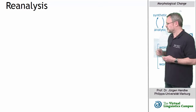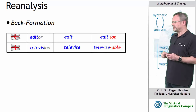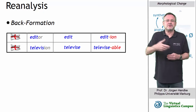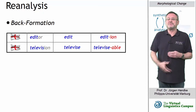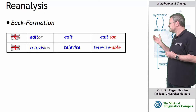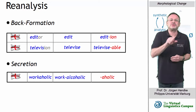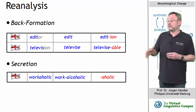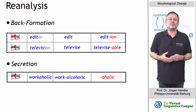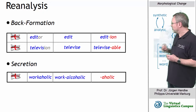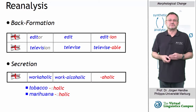Reanalysis is a further morphological change that creates new morphological patterns in two ways. The first is referred to as back formation, where new formations become possible after a complex word has been associated with new morphological patterns, as in 'edit' or 'televise'. The second reanalysis type is referred to as secretion, where former root elements — such as '-aholic', which comes from 'alcoholic' — may be turned into new affixes. With this new affix, new lexemes can be formed not by blending but by means of affixation, for example 'tobaccoholic' or 'marijuanaholic'.